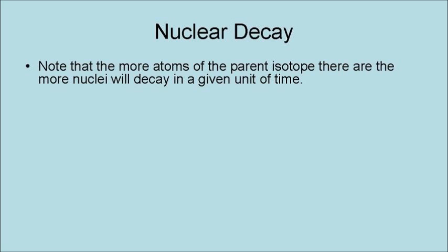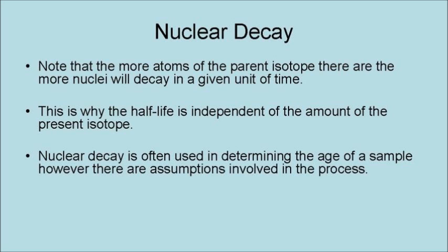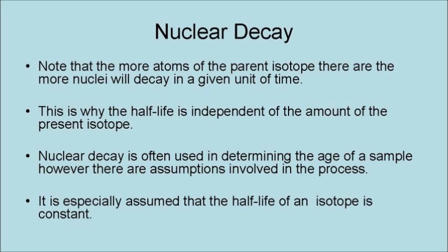Note that the more atoms of the parent isotope there are, the more nuclei will decay in a given unit of time. This is why the half-life is independent of the amount of the parent isotope. Nuclear decay is often used in determining the age of a sample. However, there are assumptions involved in the process. It is especially assumed that the half-life of an isotope is constant.